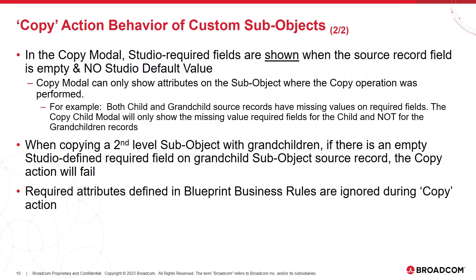In the copy modal, we only show Studio required attributes when the source record is empty and there's no default set in Studio for that attribute. Additionally, the modal will only display attributes on the sub-object where the copy operation was executed. If you have a second level sub-object and it has data at the third level for a child object, and the third level object has attributes that are Studio required but they're empty, the copy action is going to fail in this situation. And last, to reiterate, if you defined any always-true business rules in Blueprints, they're going to be ignored during the copy operation.